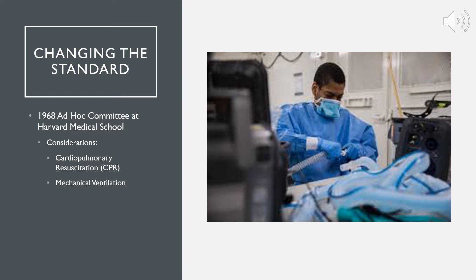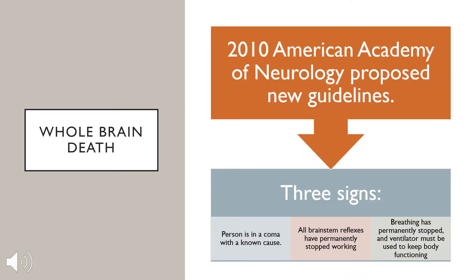CPR allowed patients to regain their heartbeats and mechanical ventilation allowed for breathing assistance. This is when they came up with a new determination for death called whole brain death. Whole brain death remains the standard for death determination, but it has undergone some revision. In 2010, the American Academy of Neurology rewrote the guidelines by establishing three signs that must be present for this diagnosis.